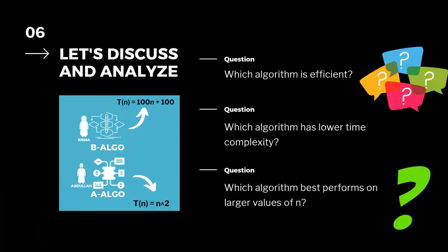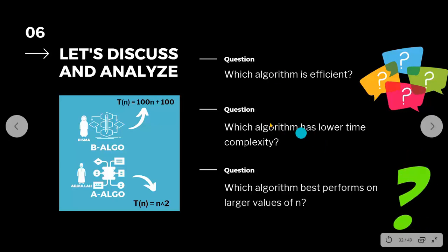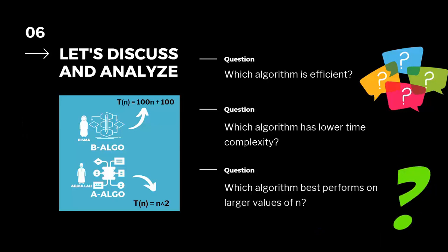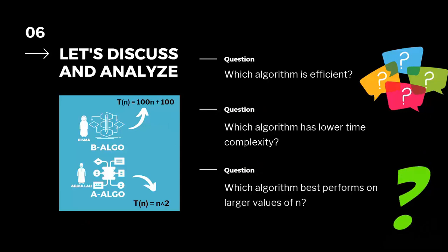Let us analyze these two algorithms and their complexities to check which is efficient. We need to answer: which algorithm is efficient and takes less time and space? Which algorithm has lower time complexity? And which algorithm performs best on larger values of n? This is a multinational company with a very large number of employees, so the sorting algorithm will be tested on very large data. We need to check which of the two algorithms performs better for very large values of n.